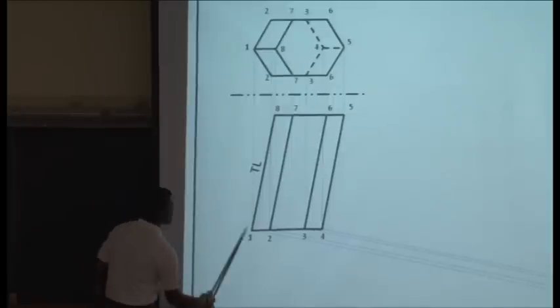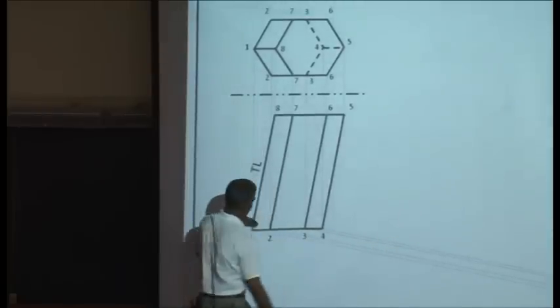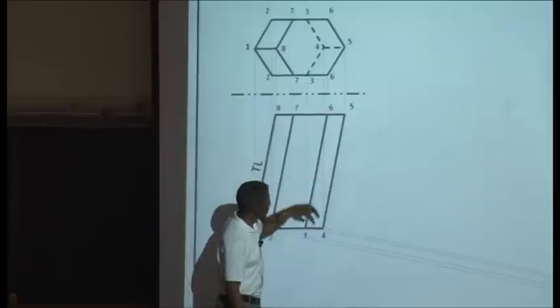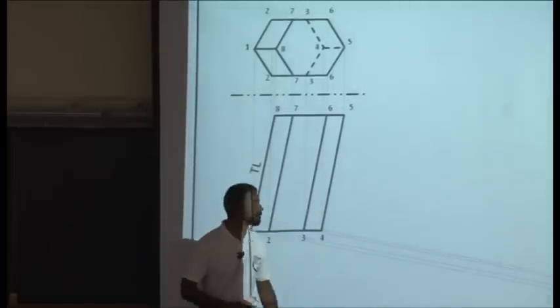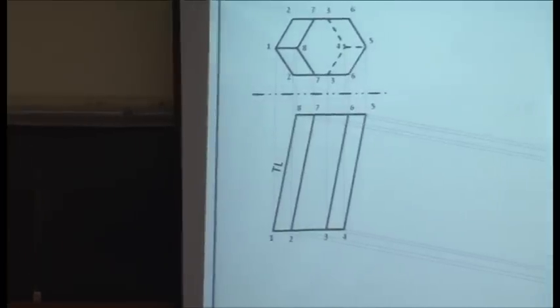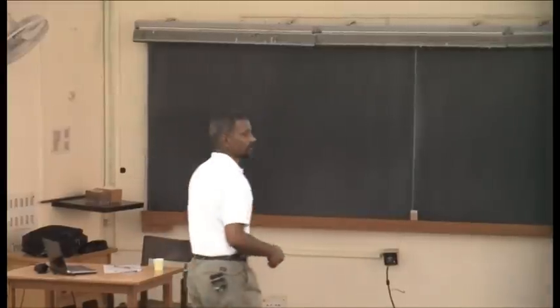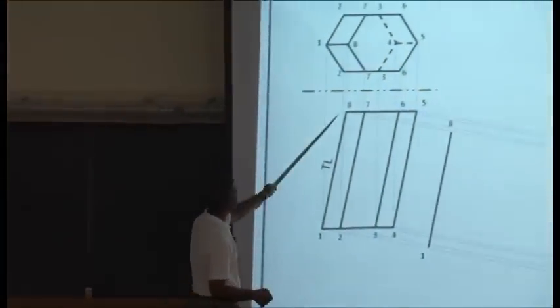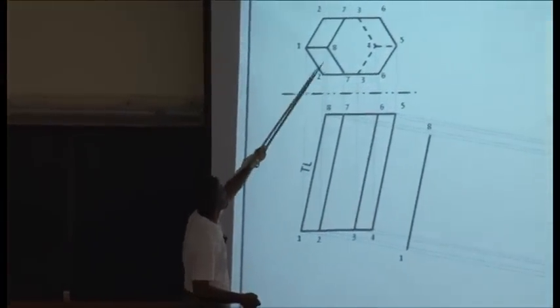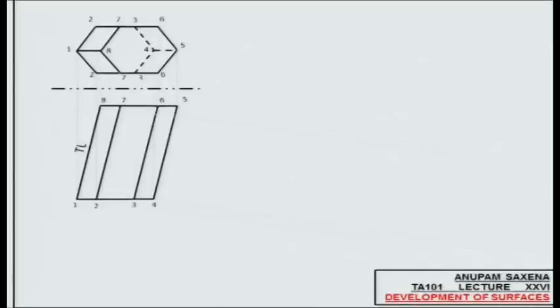Once again, scissor this edge, open the surface out — these vertices are going to appear on the respective projections. Once you have figured these projections out, start with edge 1-8 and follow the connectivity. 1-8 is connected to what? 1 is connected to 2, 8 is connected to 7, and 2 and 7 are connected. Follow this connectivity from both views.